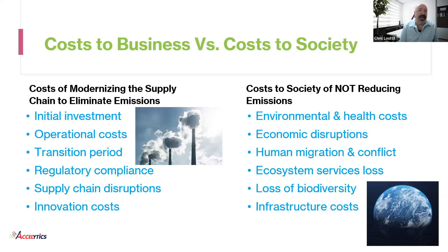When Matt first came up with the idea to do this topic for this week's webinar, I was pretty pleased because I didn't know much about it, but it's part of an issue I personally am passionate about. I wanted to take a look at this through a slightly different lens — understanding what the costs are to a business to modernize your supply chain to eliminate emissions versus what are the costs to society of not reducing emissions. First: the initial investment. Modernizing a supply chain to eliminate emissions requires a substantial upfront investment in renewable energy, energy-efficient technologies, and other sustainable practices, including retrofitting, upgrading, and reengineering processes and systems.